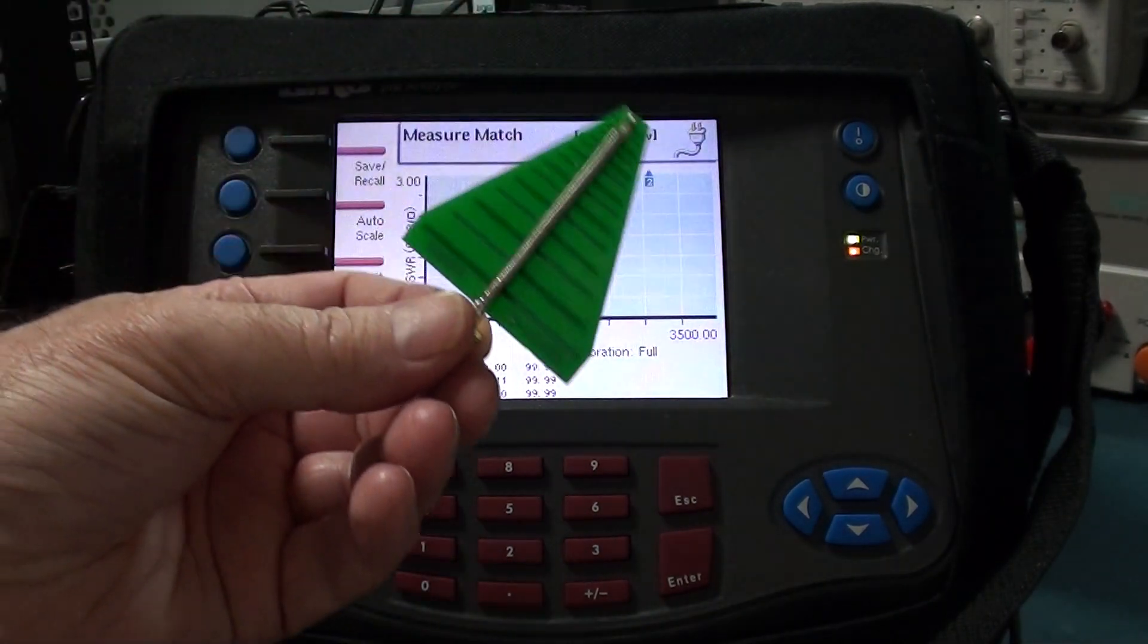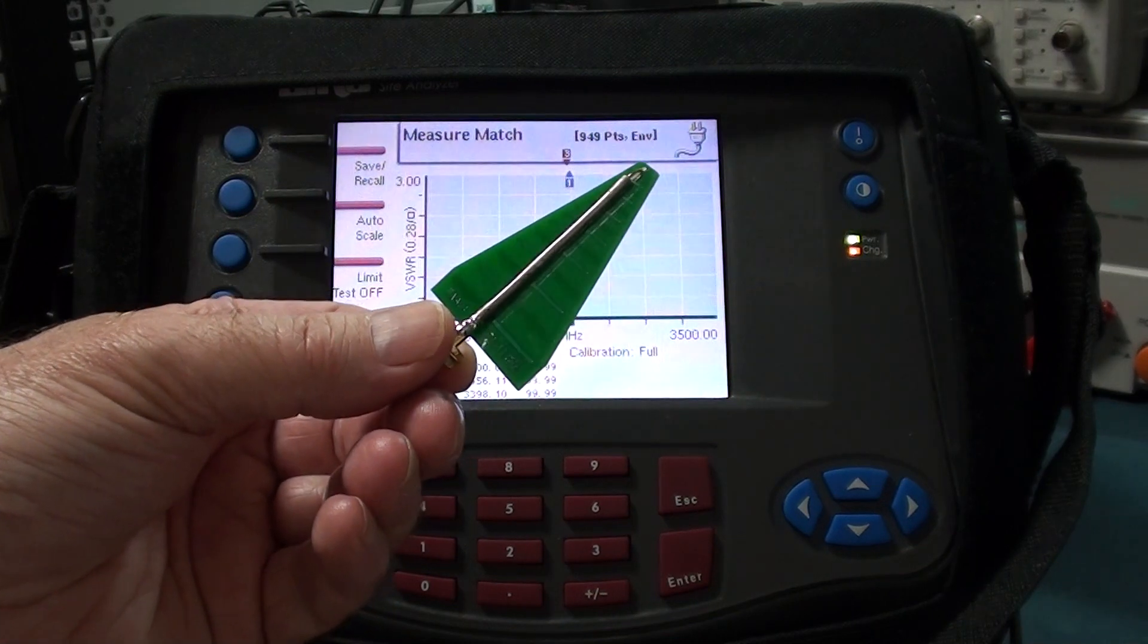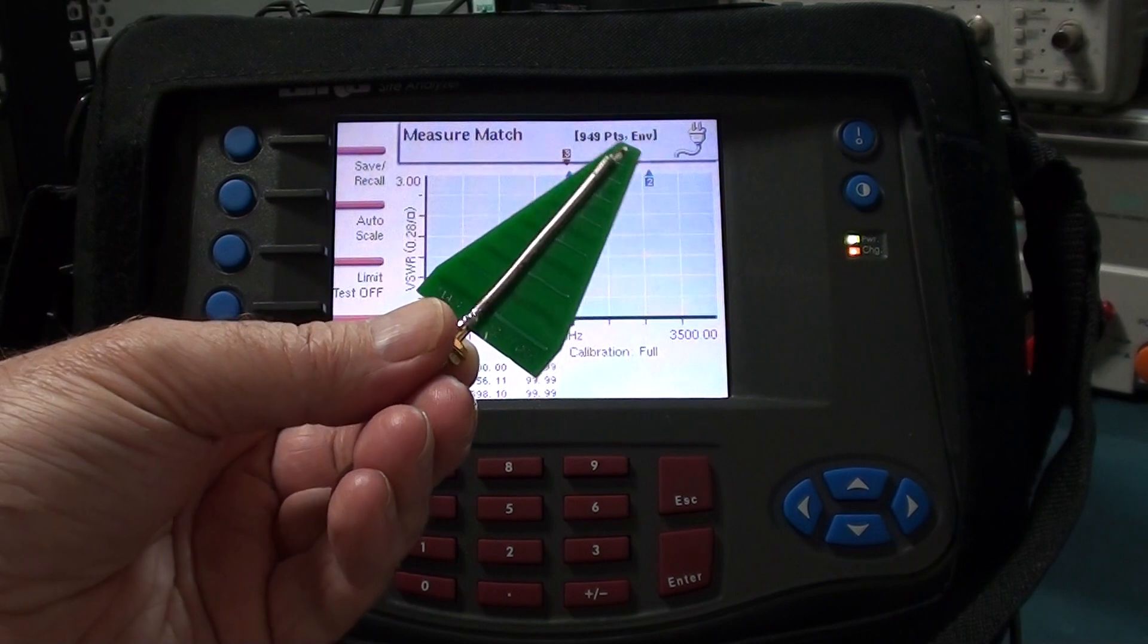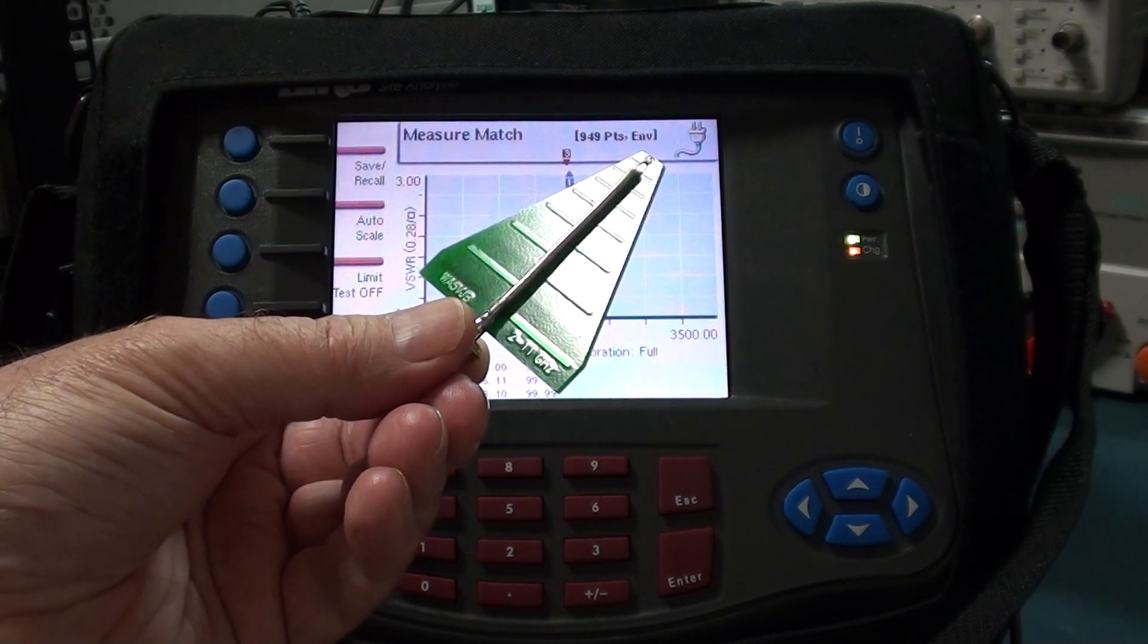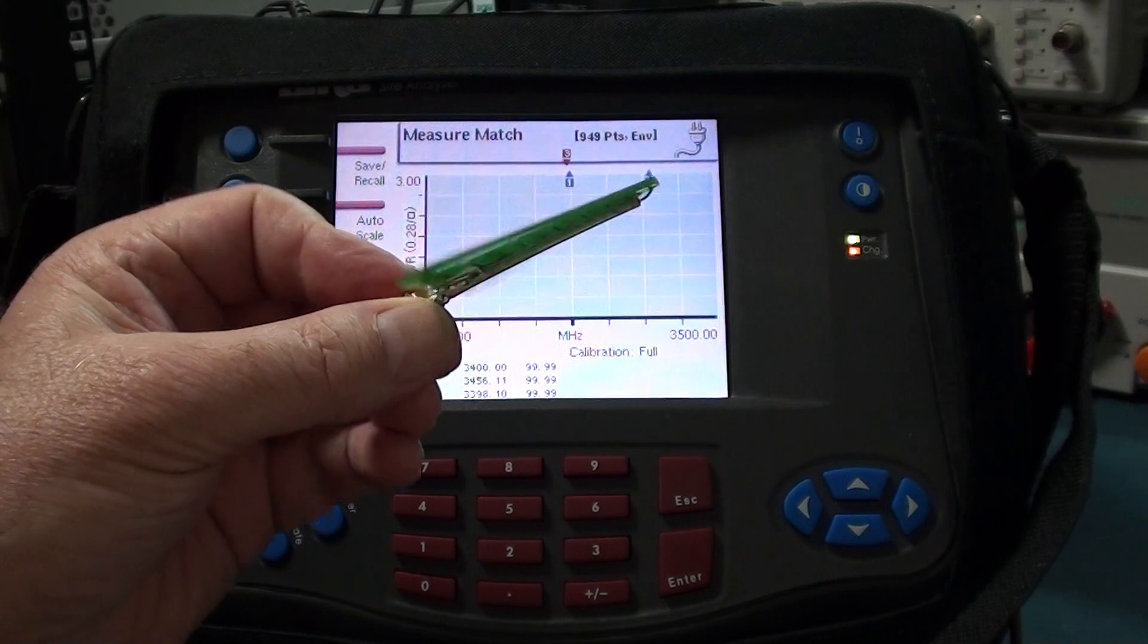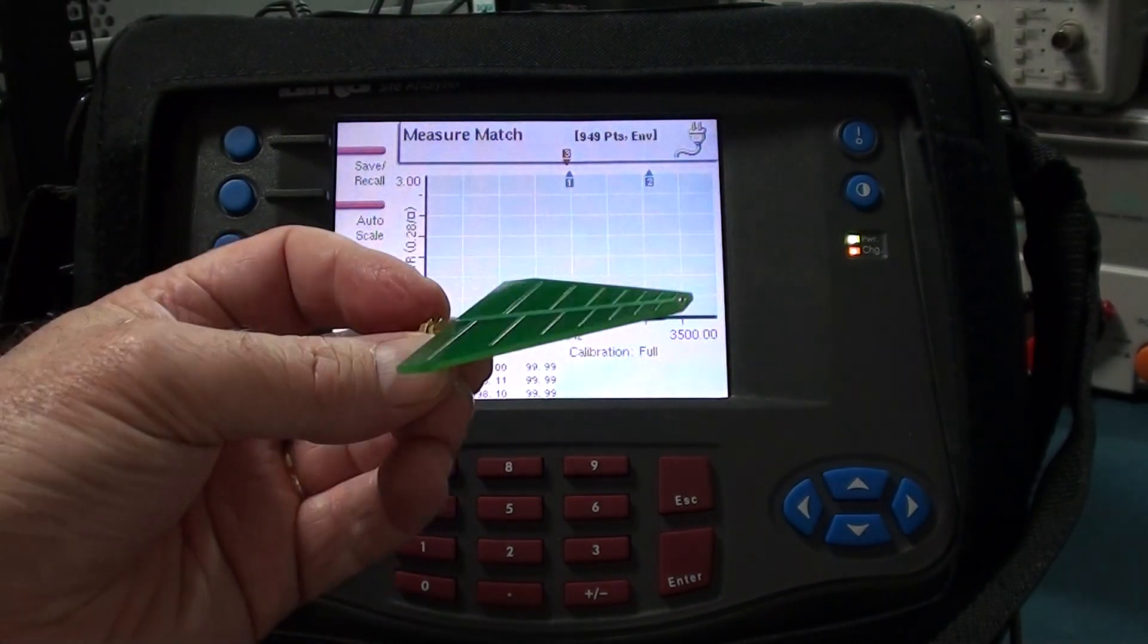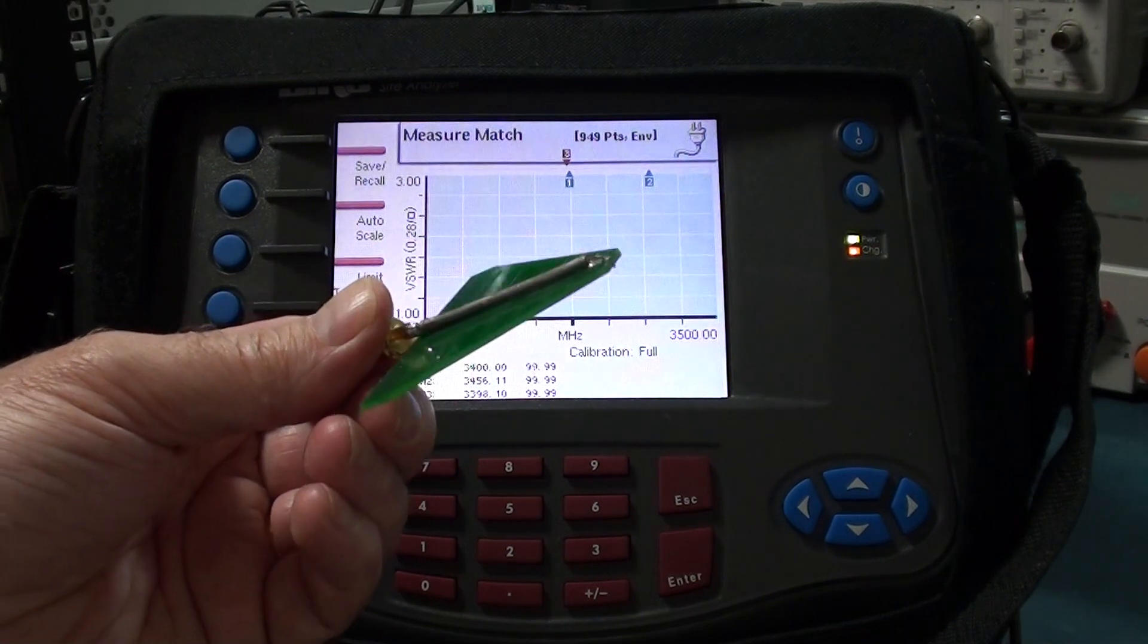We're also going to test out this LPDA, the 2 to 11 gigahertz model from WA5VJB. Great little LPDA, used as a dish feed and a whole stack of other things. Very popular out there today.